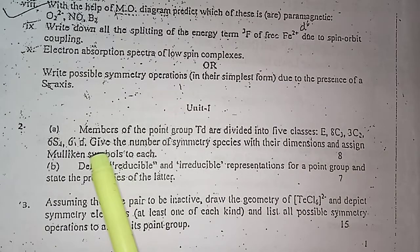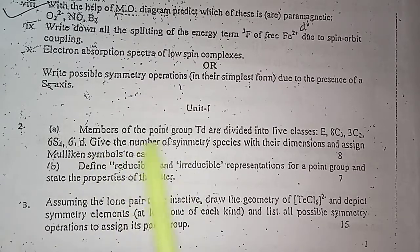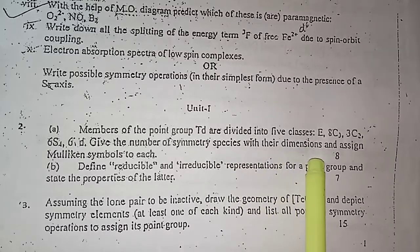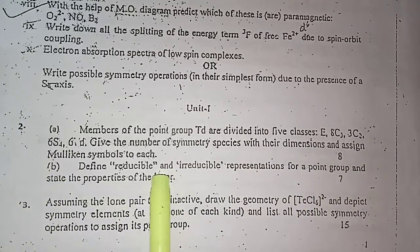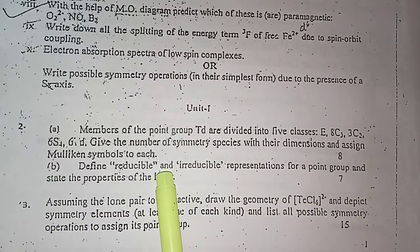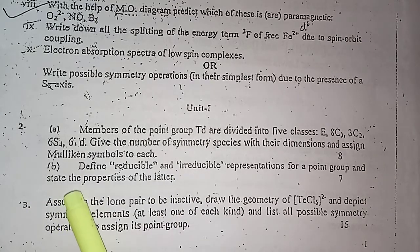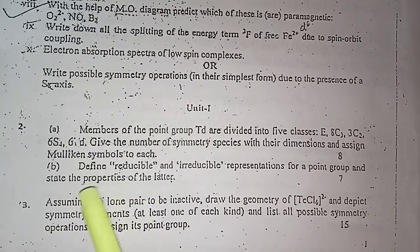What has been asked is that you have to give the number of symmetry species with their dimensions and assign the Mulliken symbol to each. The next question asked is: Define a reducible and irreducible representations for the point group.